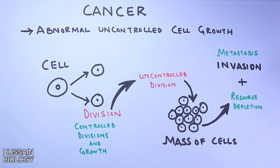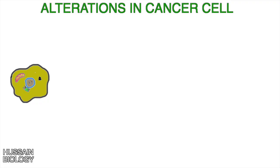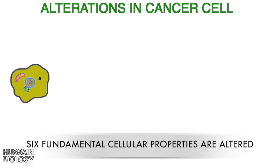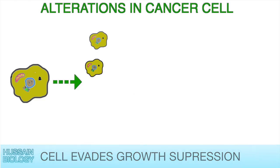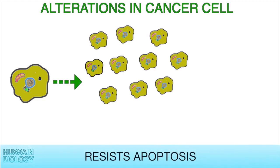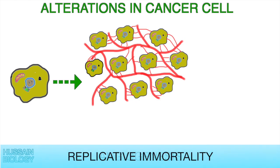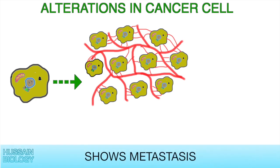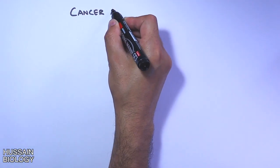Another thing to consider is the changes that occur in cancer cells. During carcinogenesis, six fundamental cellular properties are altered: the cell evades growth suppressors, sustains proliferative signaling, resists apoptosis, induces angiogenesis, achieves replicative immortality, and ultimately activates invasion through metastasis. When all these properties are fulfilled, we call that cell a cancerous or tumor cell.